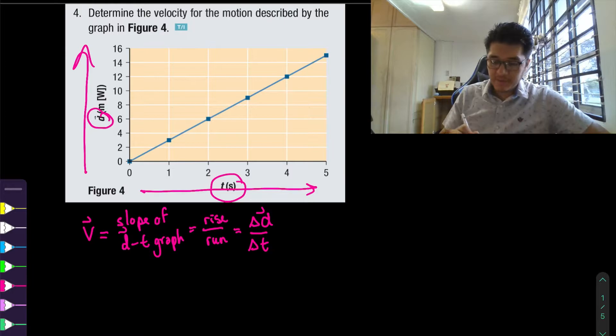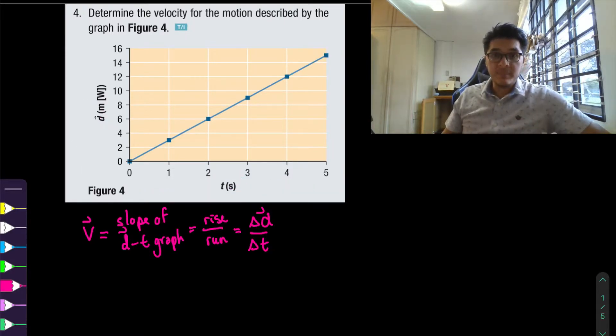So let me erase this before it gets too messy. But if you notice that's just the same thing as that displacement over the change in time. So in order to calculate the slope all we need to do is pick two points that are nice on our position time graph and calculate the slope.